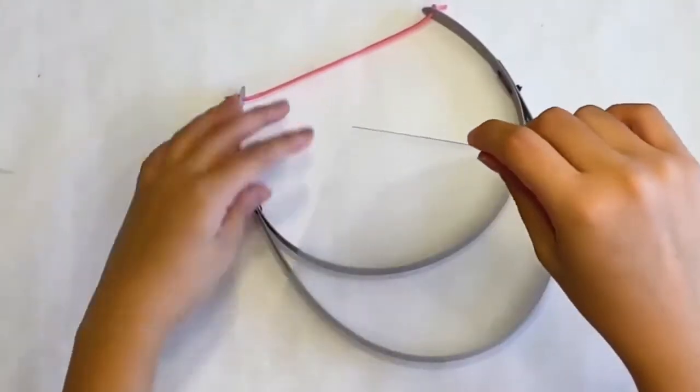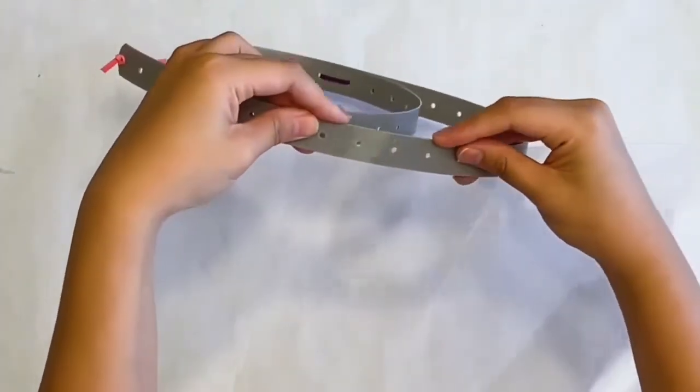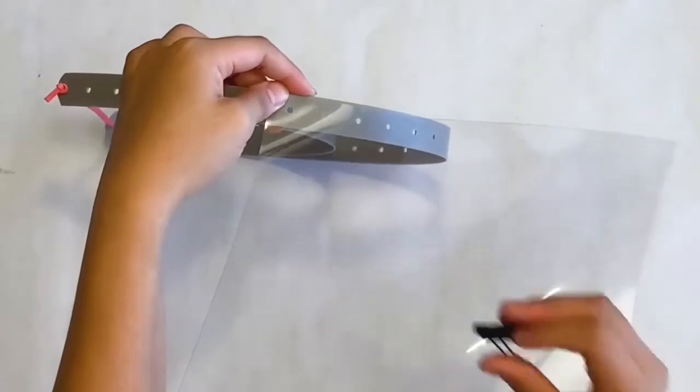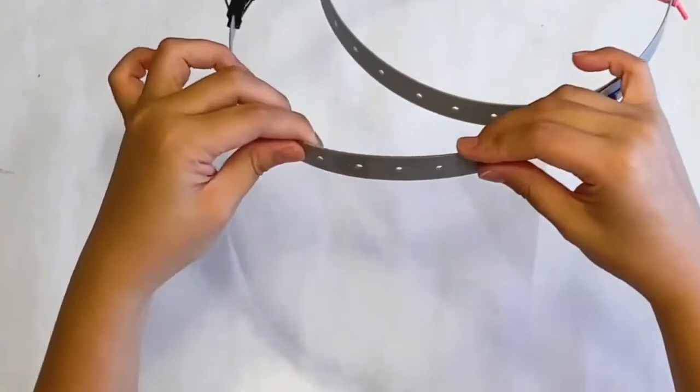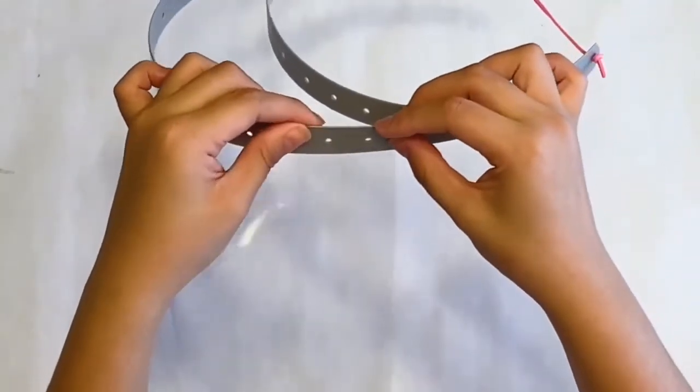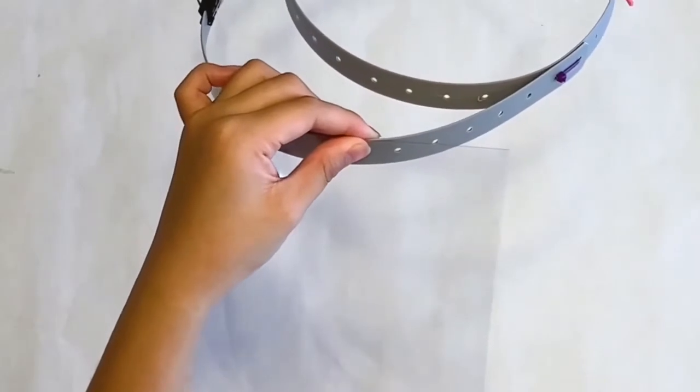So now we are just going to take our clear binder sheet, make sure it's placed horizontally and skip two holes then start aligning the sheet with the band. You could just clip it to stay in place and on the other end it should also skip two holes and you can use a clip to secure it.